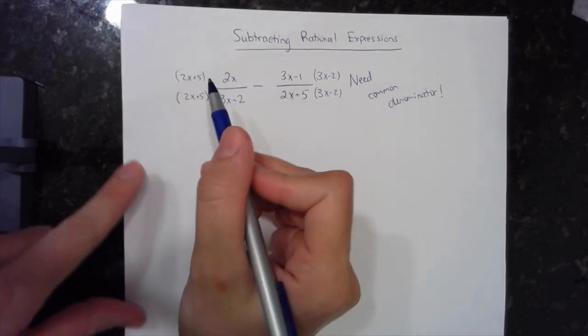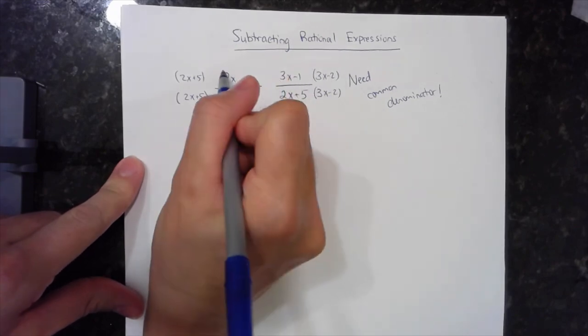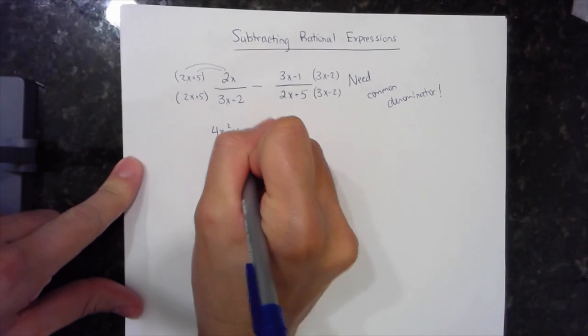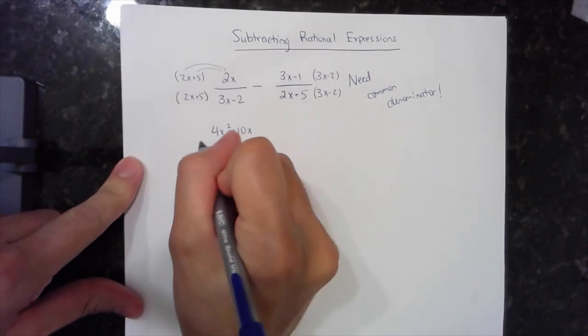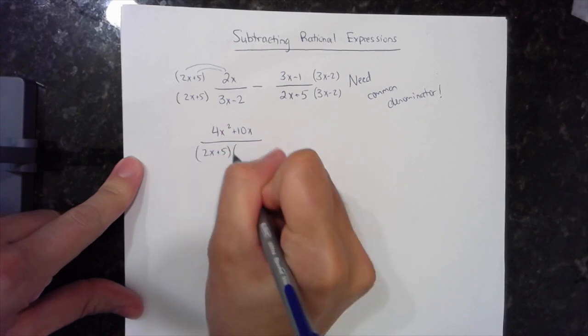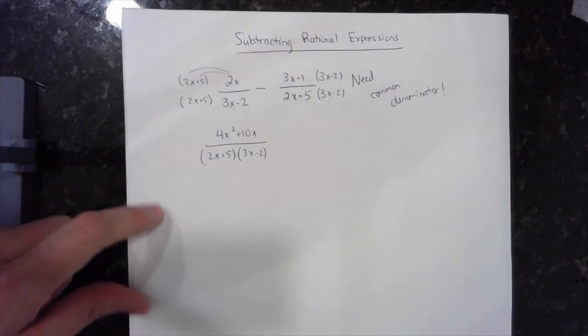So when I multiply a 2x plus 5 times this 2x, this 2x is going to distribute. So I'll end up with a 4x squared plus a 10x for my first numerator all over the product of these two, which I'm going to keep in factored form because it's easier to simplify later if that's the case.